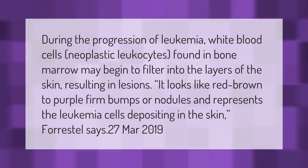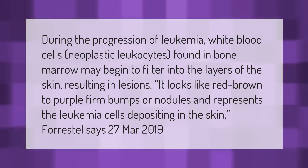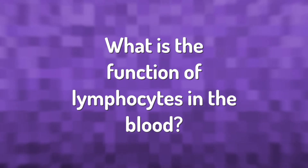During the progression of leukemia, white blood cells — neoplastic leukocytes found in bone marrow — may begin to filter into the layers of the skin, resulting in lesions. It looks like red-brown to purple firm bumps or nodules, and represents the leukemia cells depositing in the skin.